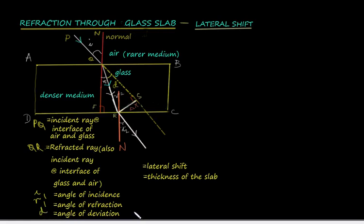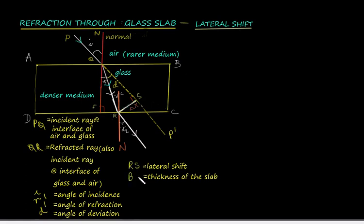The incident ray PQ would have passed along the line PP-dash if refraction did not occur. But since the ray passes from a rarer to a denser medium, it bends towards the normal. This angle by which it has deviated is the angle of deviation. A perpendicular is drawn to QP-dash, that is TS, and it meets R. The distance RS is the lateral shift, and QF is the thickness of the glass slab.